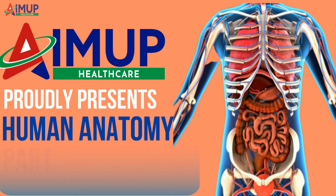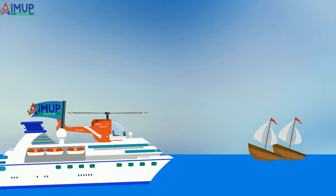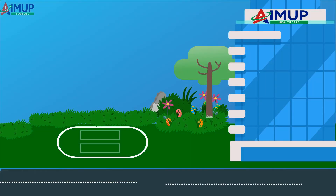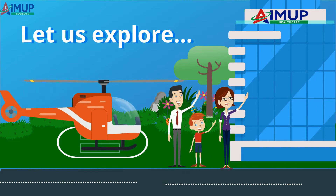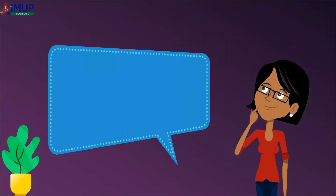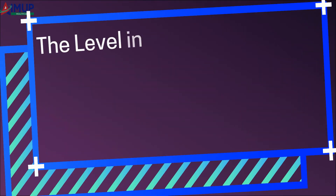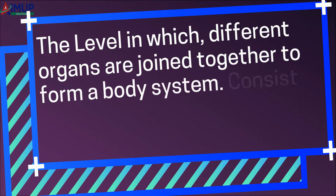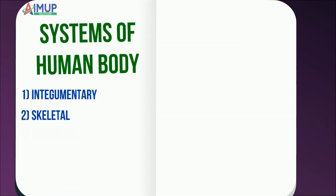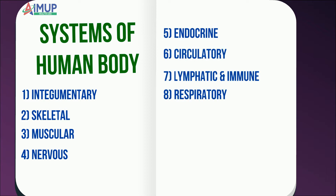AIMUP HealthCare proudly presents Human Anatomy Part 2. Let us explore our organ systems. The system level is the level at which different organs are joined together to form a body system, consisting of several related organs that have a common function. The human body systems include: integumentary, skeletal, muscular, nervous, endocrine, circulatory, lymphatic and immune, respiratory, digestive, excretory, and reproductive.